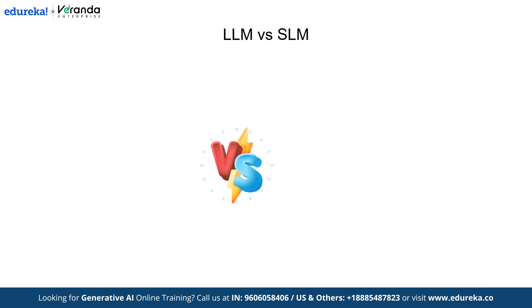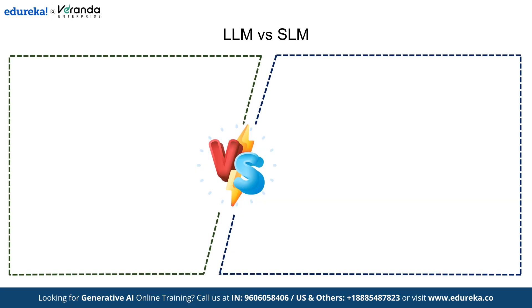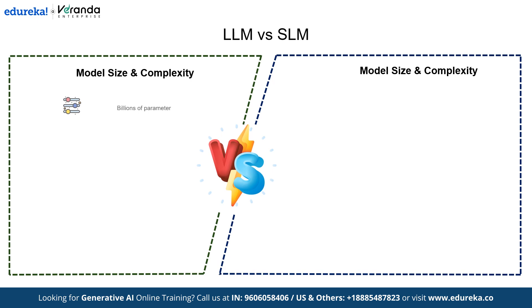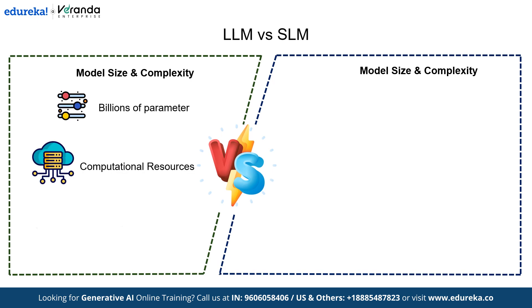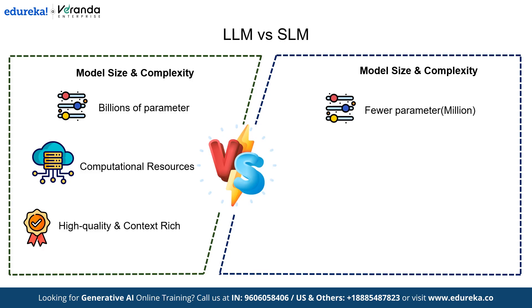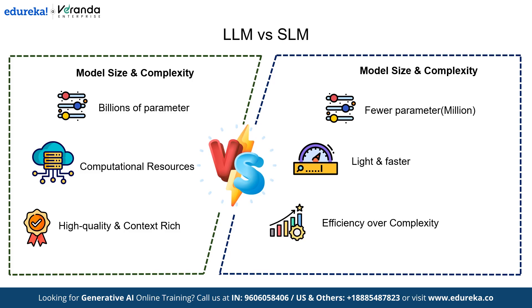Now let's dive into the core differences between LLMs and SLMs, starting with model size and complexity. LLMs often have billions of parameters and require vast computational resources to train and run. Their large size enables them to generate high-quality, context-rich responses. On the other hand, SLMs are designed with fewer parameters, often in the millions, making them lighter and faster. They prioritize efficiency over complexity, which makes them ideal for simpler tasks.